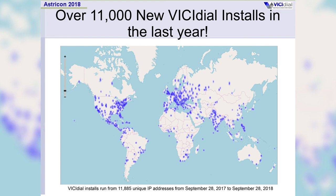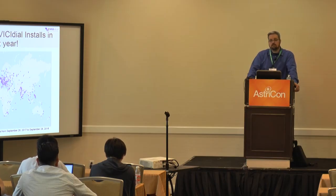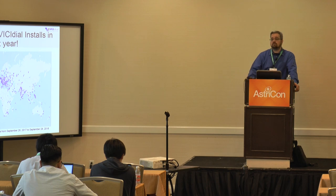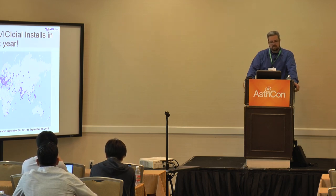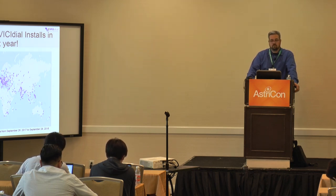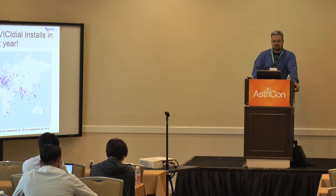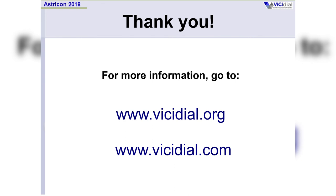As far as VICIdial installs — we don't really collect any data, but when you do a new install using VICIbox, it comes to our servers to grab the country code and area code files because those are updated several times a year. We're able to grab the IP address of the requesting server. We've had over 11,000 unique IP addresses in the last year that did that initial new VICIdial install, and here is the map of those IPs plotted across the world. We're basically increasing — we've had more in the last year than in the previous year. Hooray VICIdial! And that is it for my presentation. Did anybody have any questions?